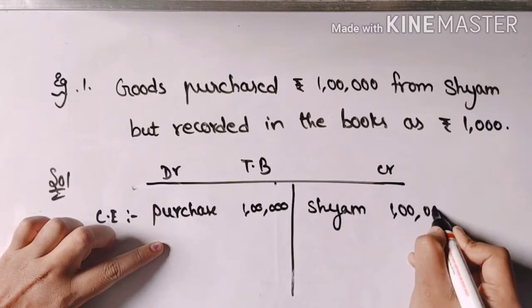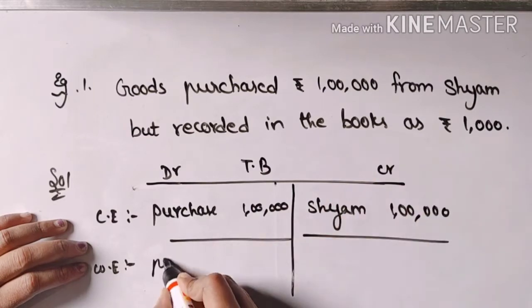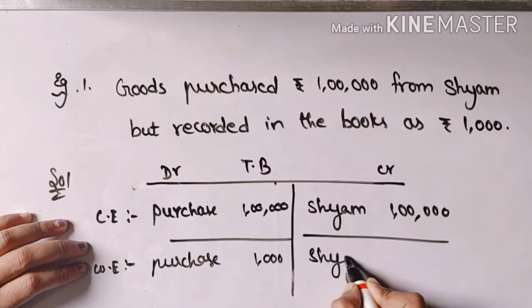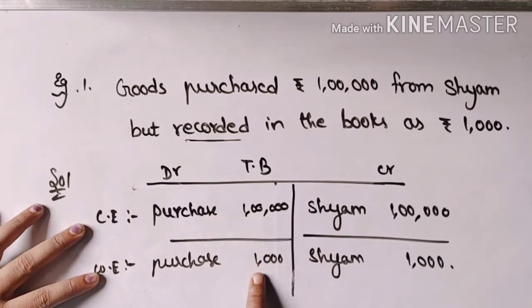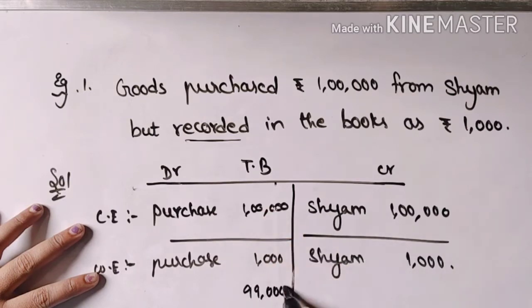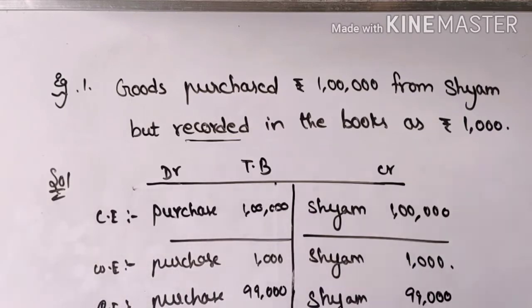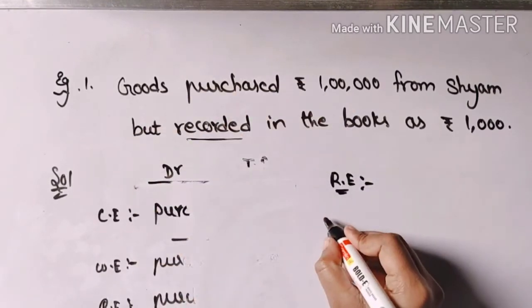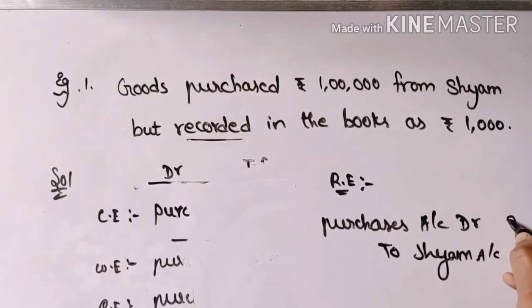The wrong entry recorded Purchases Account at rupees one thousand instead of one lakh. To reach one lakh from one thousand, we must add rupees 99,000. So the rectification entry is: Purchases Account debit rupees 99,000 to Sham Account rupees 99,000. This is the rectification entry for this error.